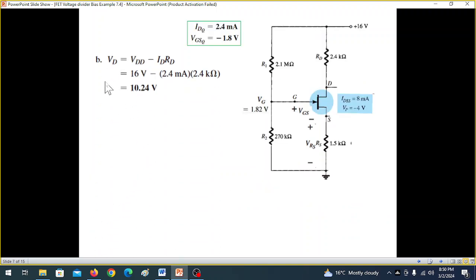And now part B, we have to find VD. So VD, that means this voltage here is VDD minus IDRD. And putting in the values we get VD is 10.24V.